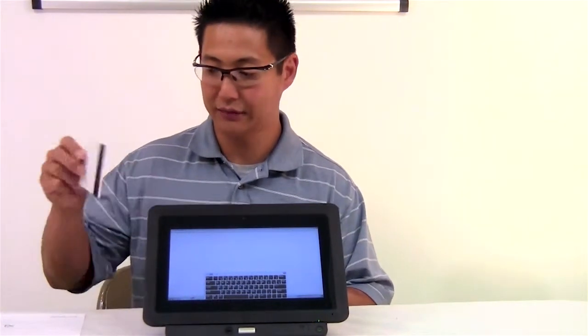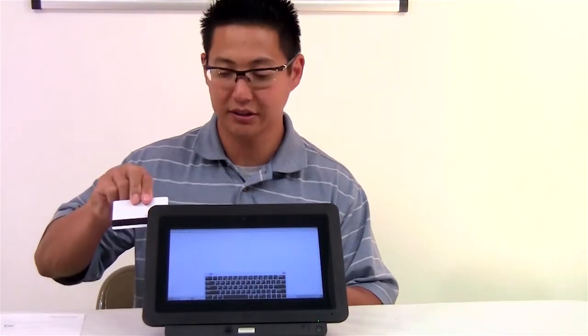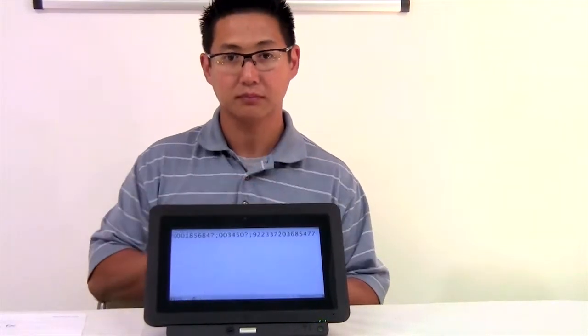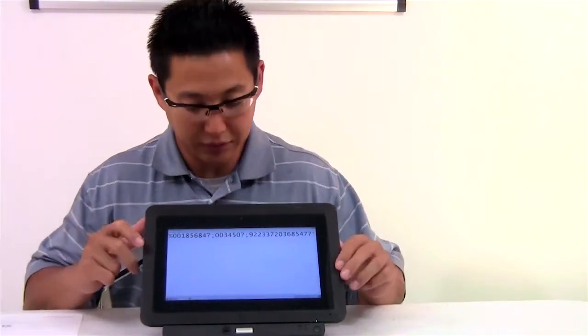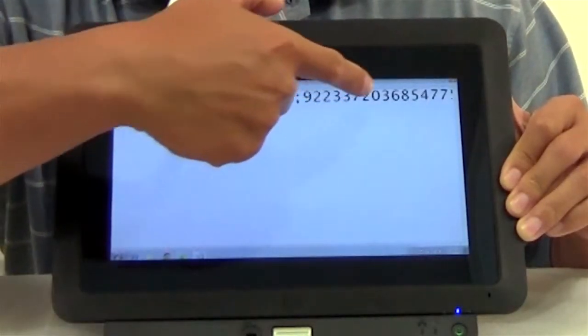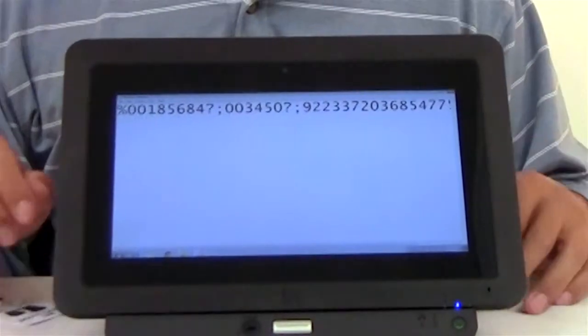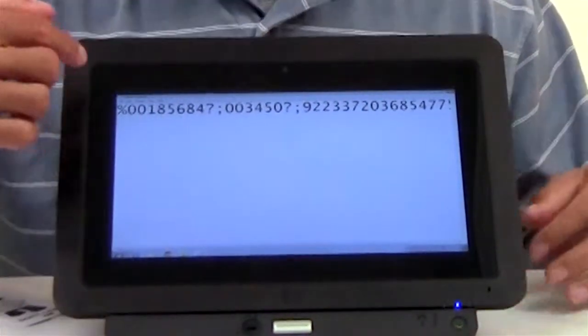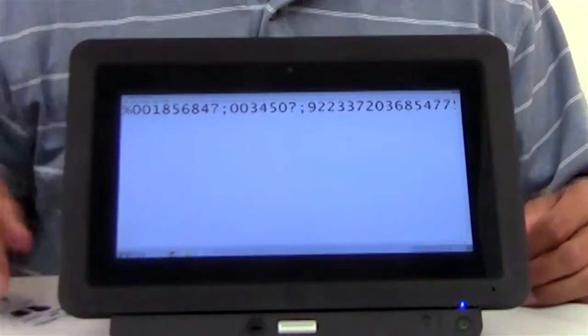Let me show you an example. I have just a test card here, but it writes data to all three tracks. So if you take a look, there's a percentage character, a semicolon, a semicolon, exclamation point. There's some extra characters that surround the numbers or the different data on the tracks.